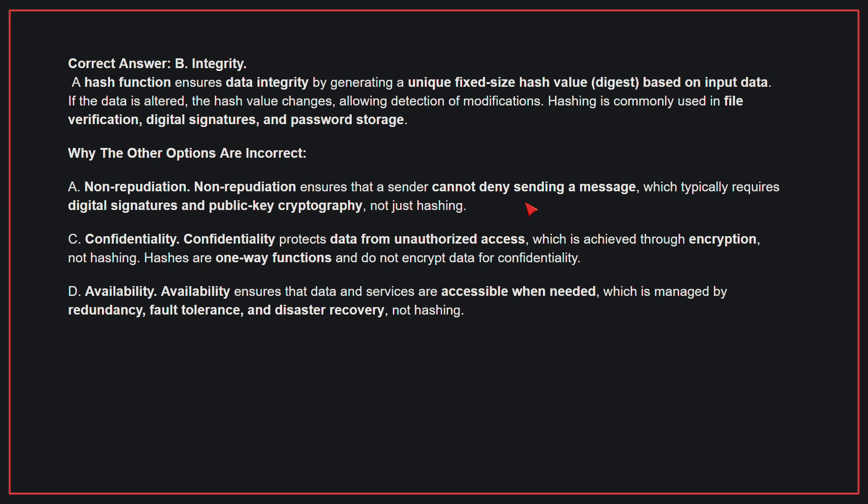Why the other options are incorrect? A, Non-repudiation: non-repudiation ensures that a sender cannot deny sending a message, which typically requires digital signatures and public key cryptography, not just hashing. C, Confidentiality: confidentiality protects data from unauthorized access, which is achieved through encryption, not hashing. Hashes are one-way functions and do not encrypt data for confidentiality. D, Availability: availability ensures that data and services are accessible when needed, which is managed by redundancy, fault tolerance, and disaster recovery, not hashing. Therefore, the correct answer is B, Integrity.